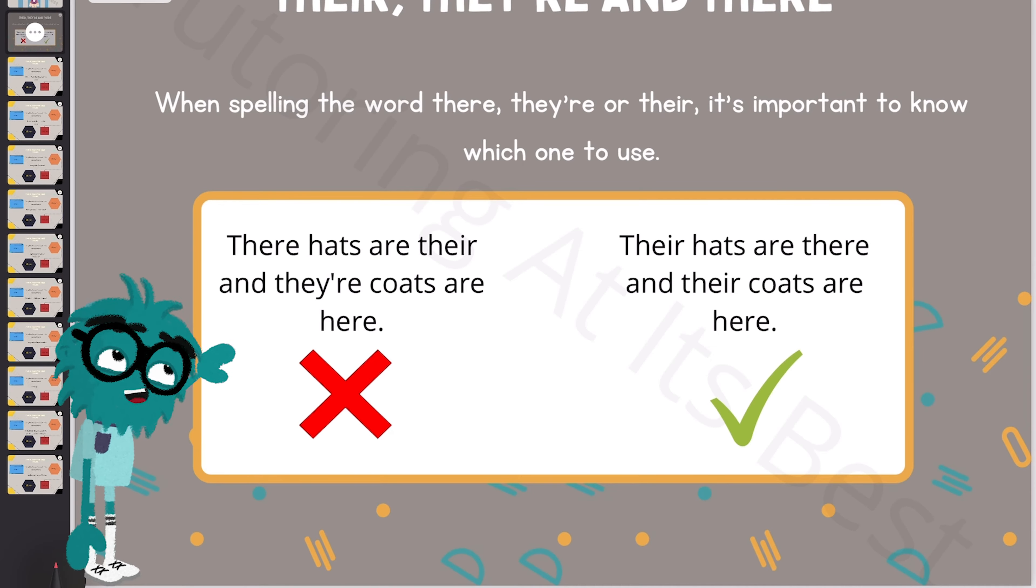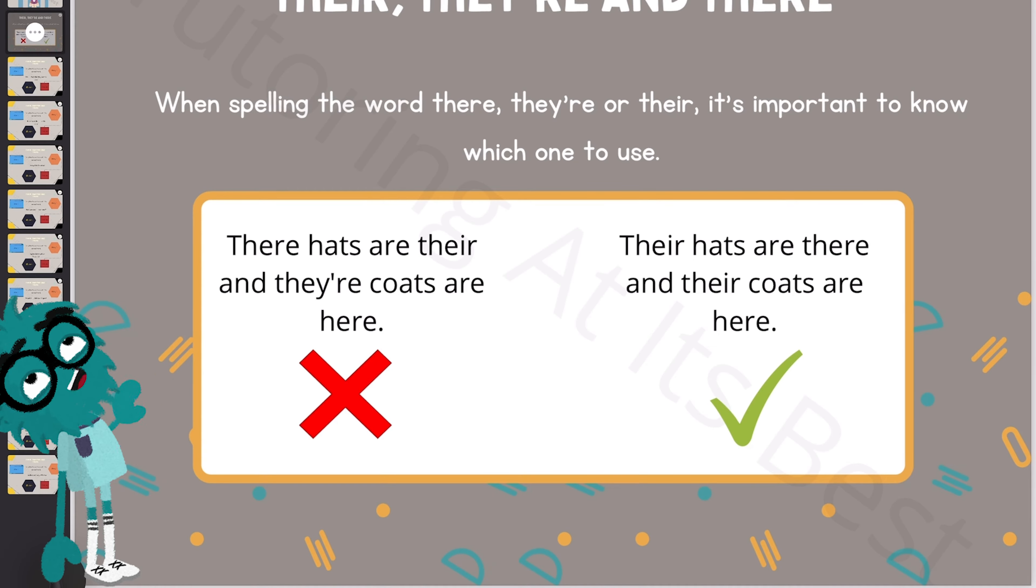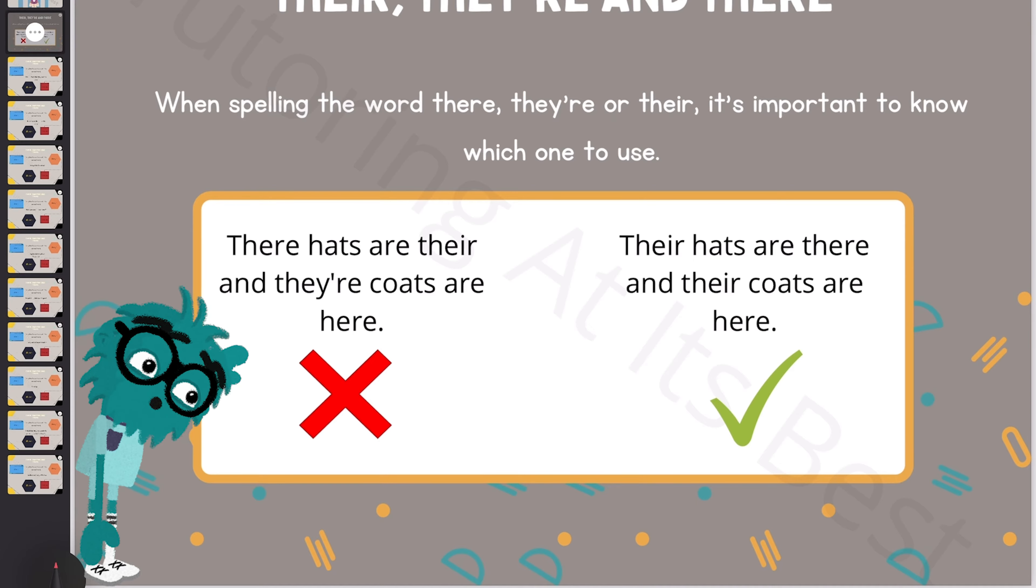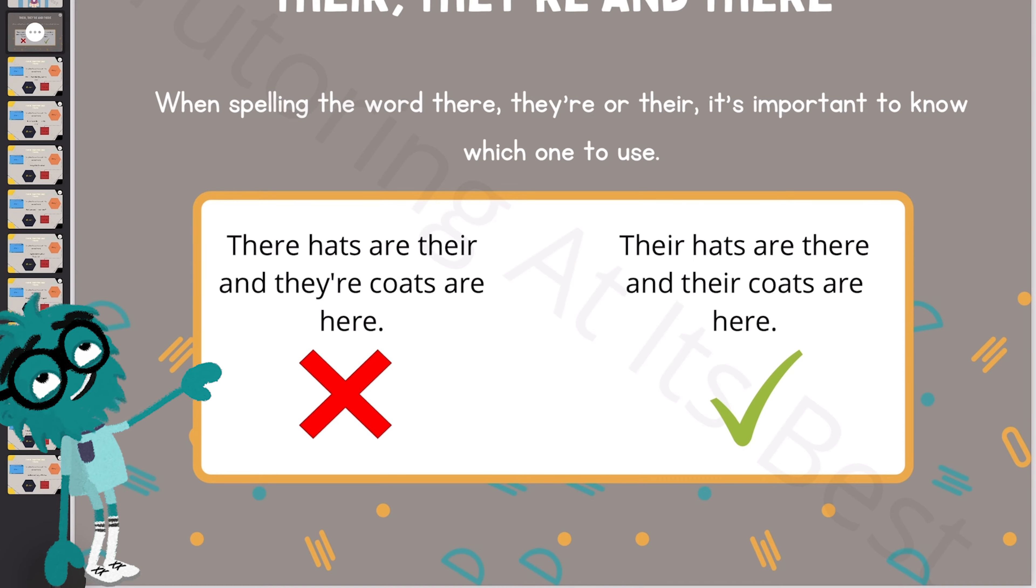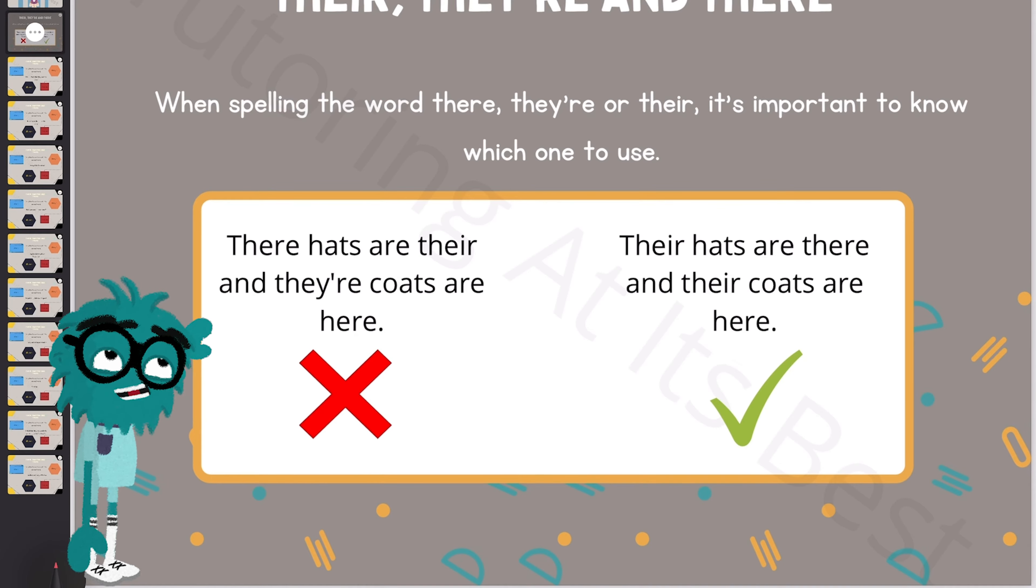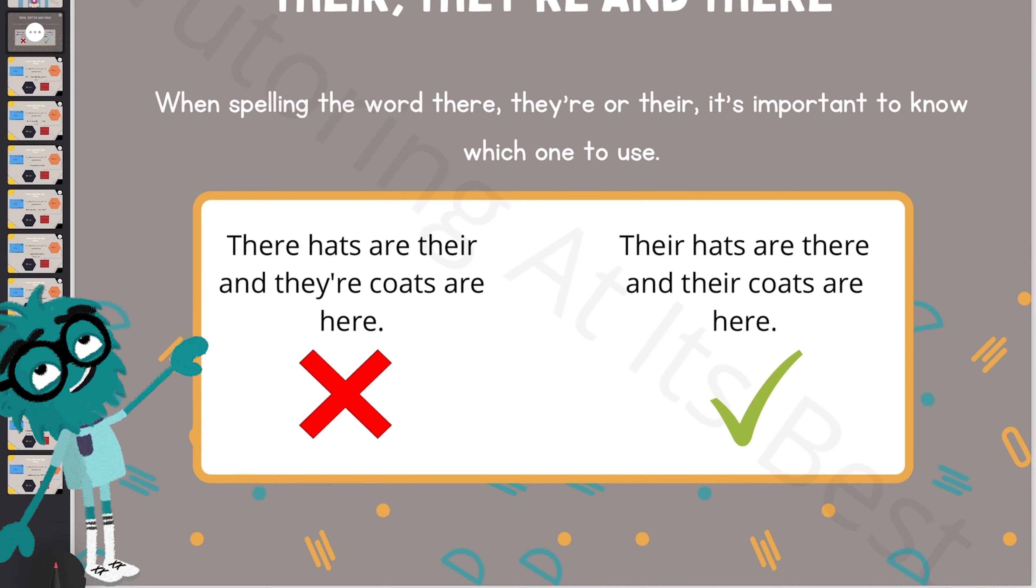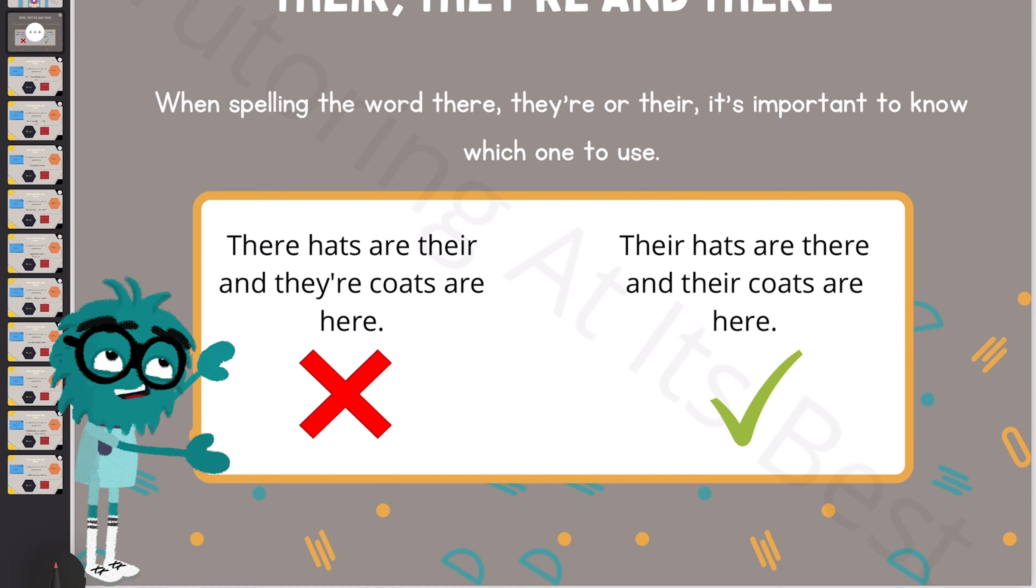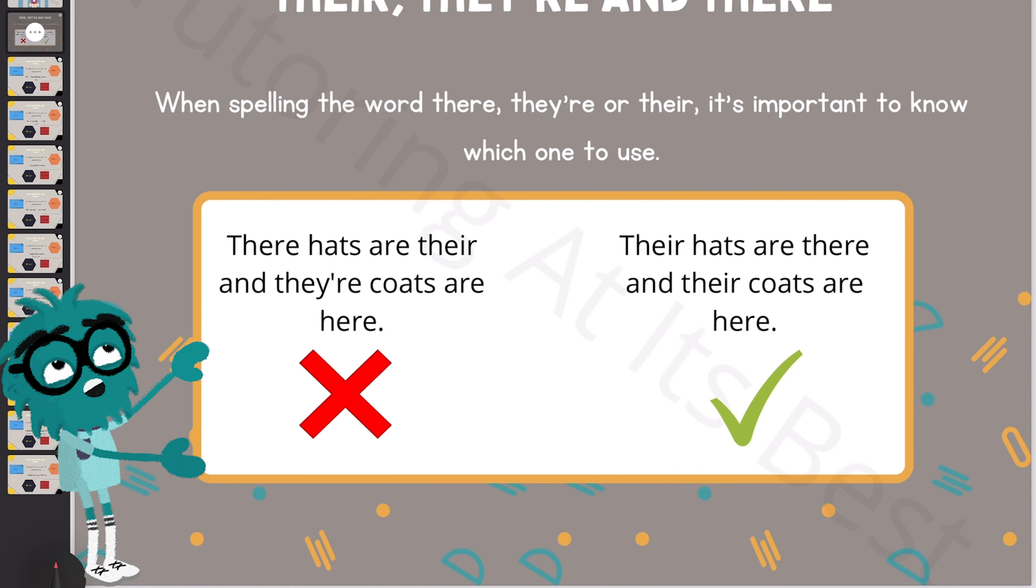Now, when spelling the word there, they're, or their, it's important to know which one to use. Their hats are there and their coats are here. There's definitely something wrong here, and if you haven't figured it out already, here's the correct version: Their hats are there and their coats are here.